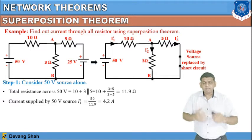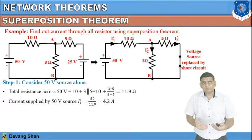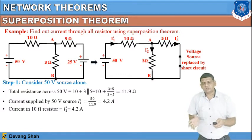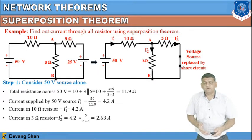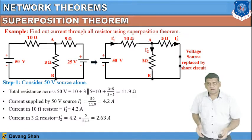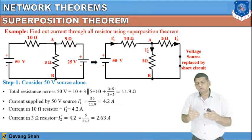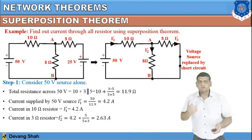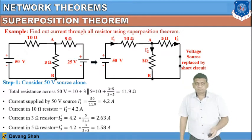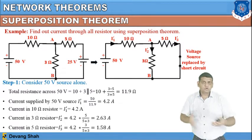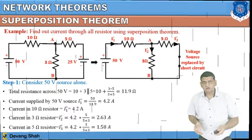The current supplied by the 50V source, defined as I1', equals 50 divided by 11.9 — the total resistance of the circuit — which gives 4.2 ampere. From this, using the current divider rule, I2' equals 4.2 multiplied by 5 divided by (5 + 3), giving 2.63 ampere. That is the current passing through the 3 ohm resistance due to the effect of the 50V source, flowing from A to B, top to bottom. Similarly, the current through the 5 ohm resistance is 1.58 ampere.